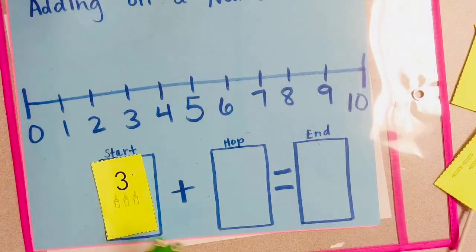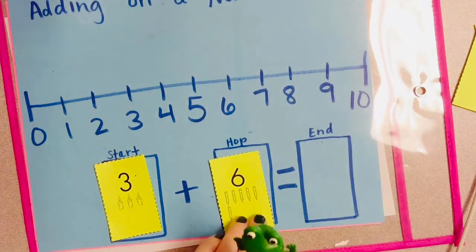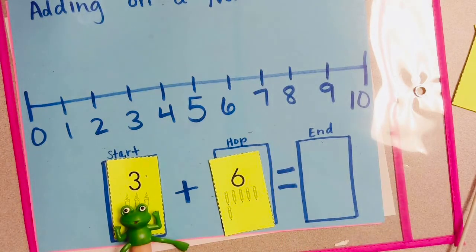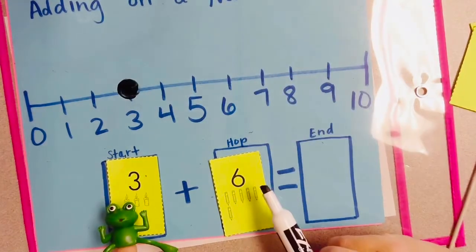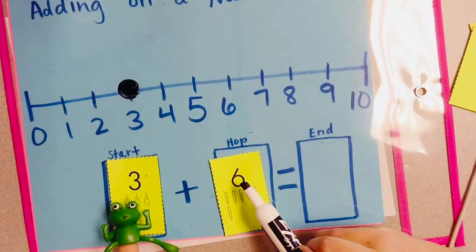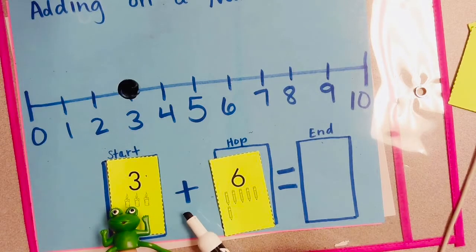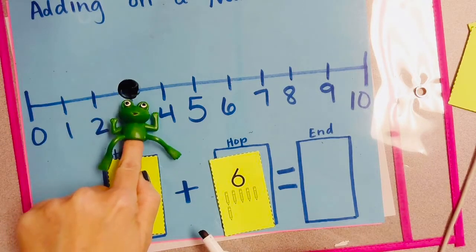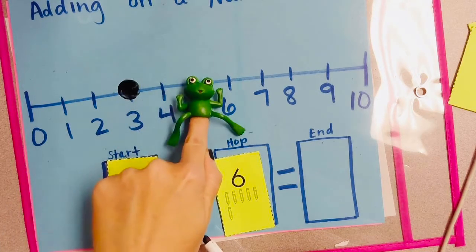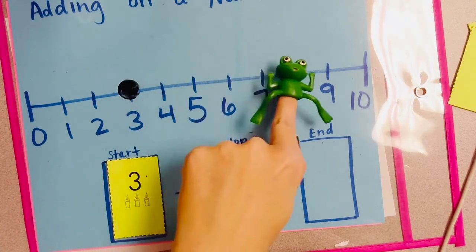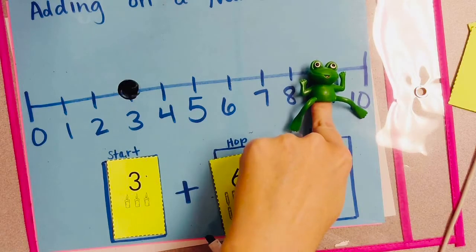Let's watch and see how frog hops bigger numbers. We're going to start on 3. We'll get a lily pad ready for him. And we know we're going to hop 6 numbers forward since we're adding. Ready? 1, 2, 3, 4, 5, 6 is where he lands.